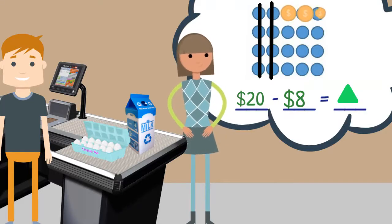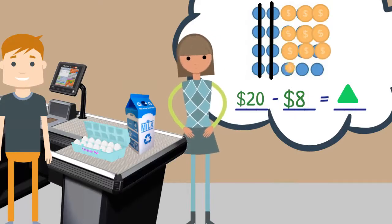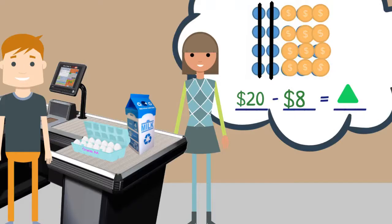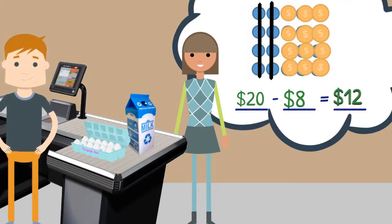1, 2, 3, 4, 5, 6, 7, 8, 9, 10, 11, 12. Excellent! I have $12 left after buying milk and eggs. So, 20 minus 8 equals 12.